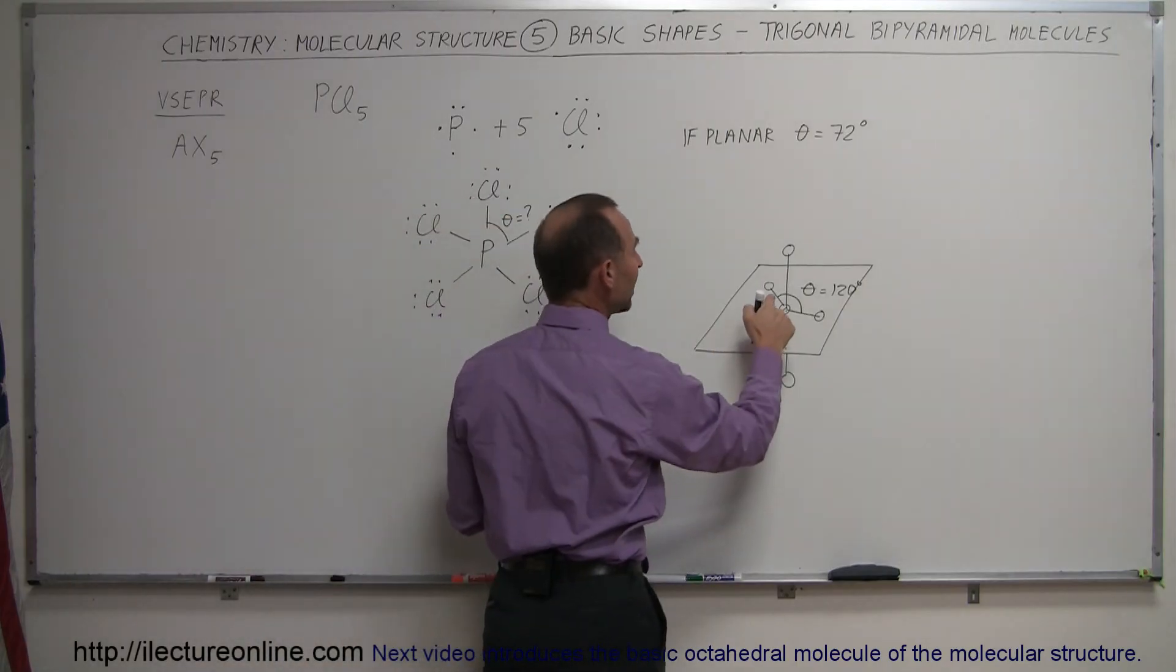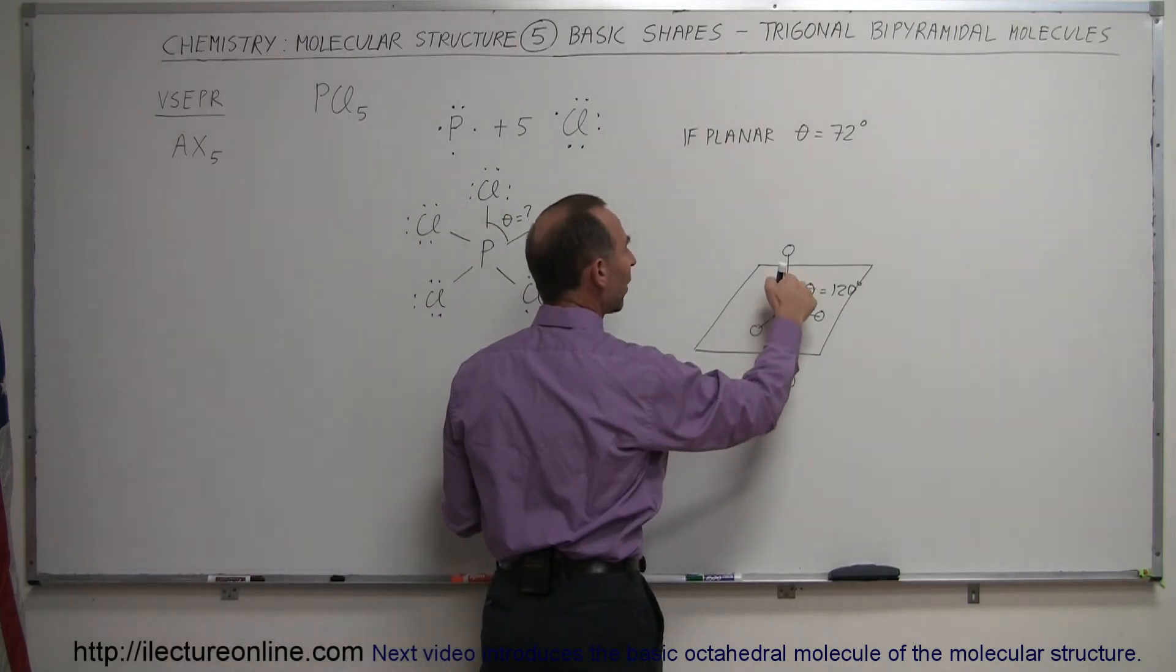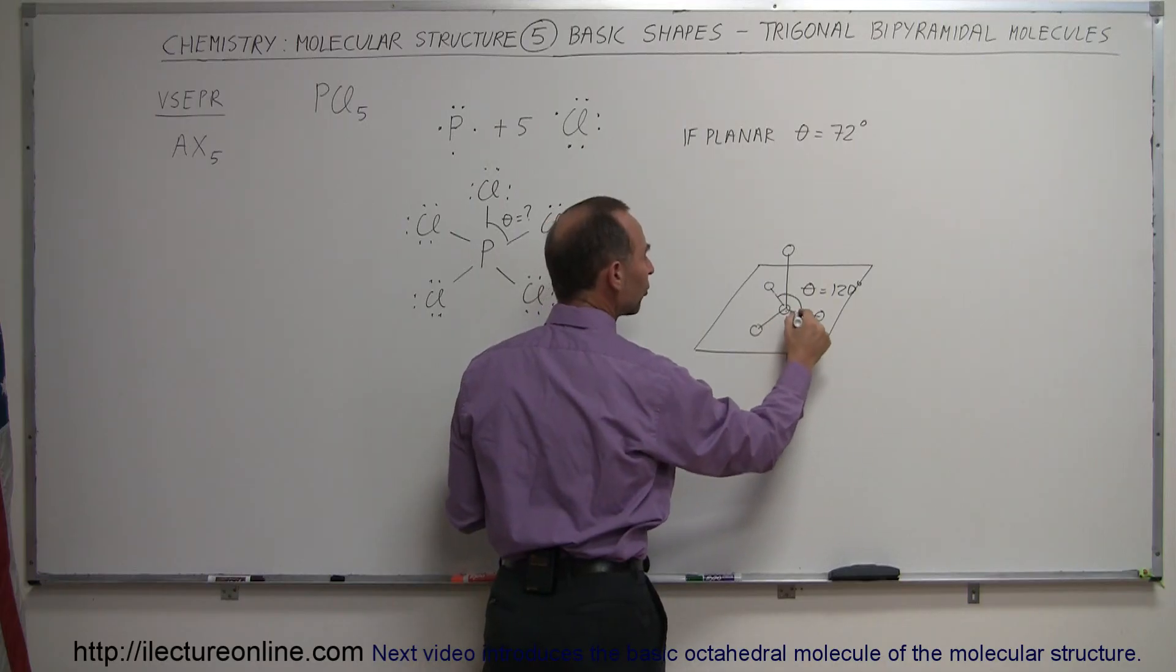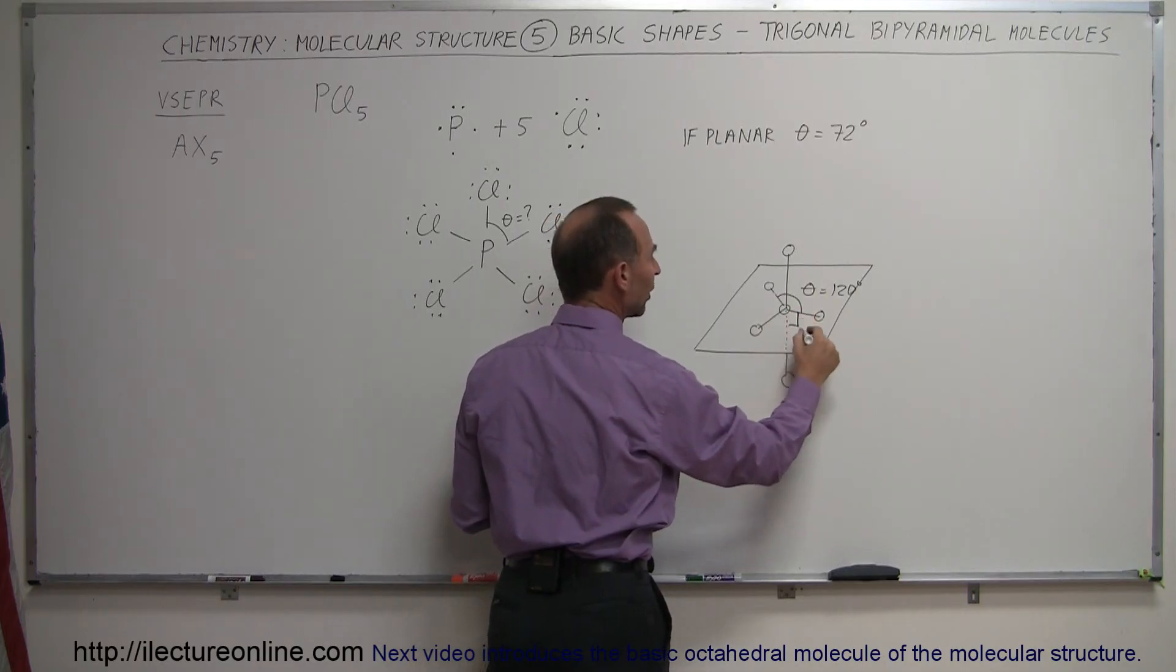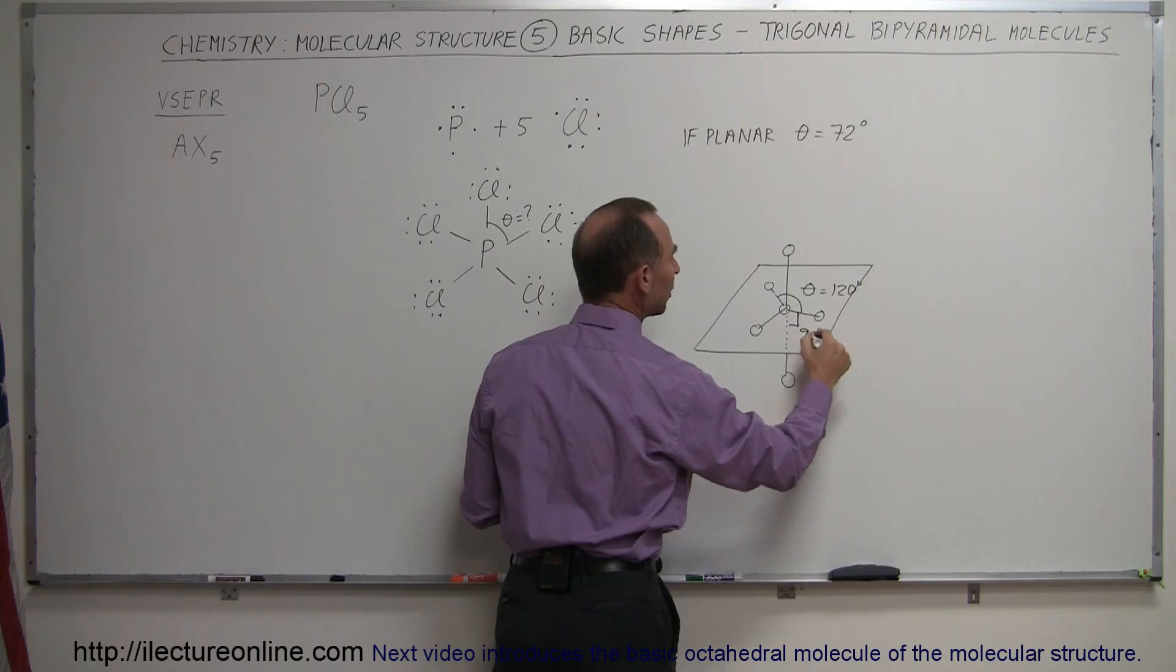And then the angle between these three bonds and the bond at the top and these three bonds and the bond at the bottom, those are right angles. So there the angle is equal to 90 degrees, but again, much larger than 72 degrees.